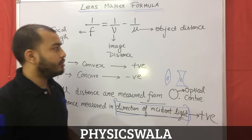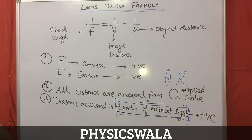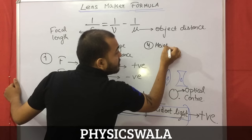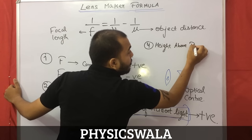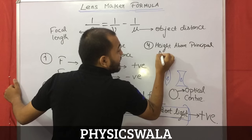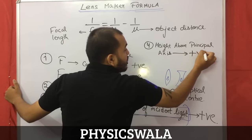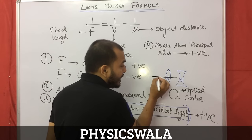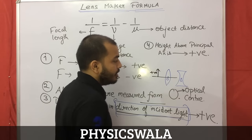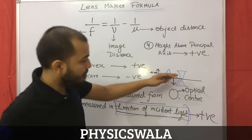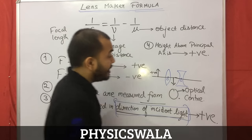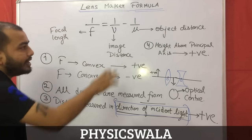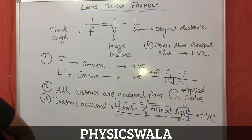Rule number four: heights above the principal axis are positive. So if this is the principal axis, any height above it will be positive, and any height below the principal axis will be taken as negative. These are the four rules — keep them in mind, and now let's apply them to a simple problem.